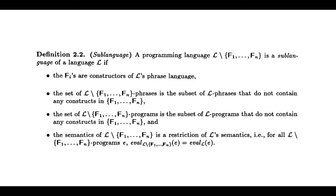Now, what is a sub-language? Exactly what you'd expect. The syntax is L set-difference {f1, ..., fn} — a language L minus the constructs we're removing. So for example, if your language has do-while loops and while loops, and you want to remove do-while, you'd write L set-minus {do-while}. The constructs being removed must actually exist in L.